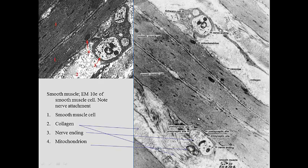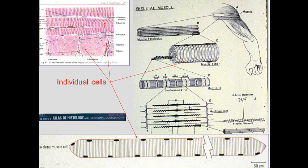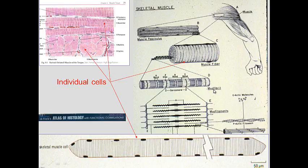Another type of muscle is skeletal muscle. Here we see a muscle from the arm. We can identify a fascicle — a group of cells — and then individual muscle fibers or muscle cells. This individual cell has nuclei on the periphery. Inside the cell, we have myofibrils, which are linear structures inside the muscle fiber.